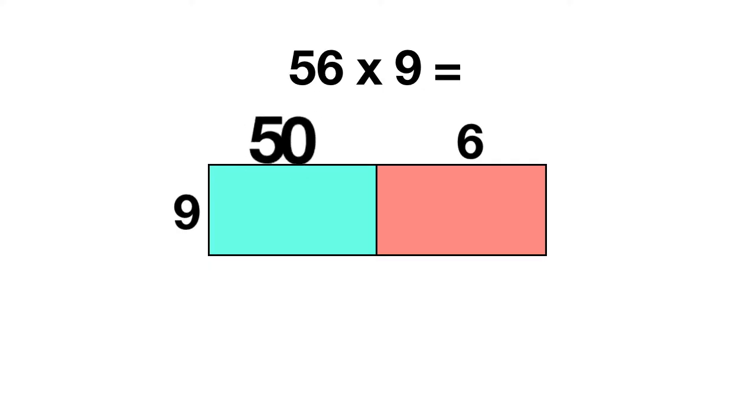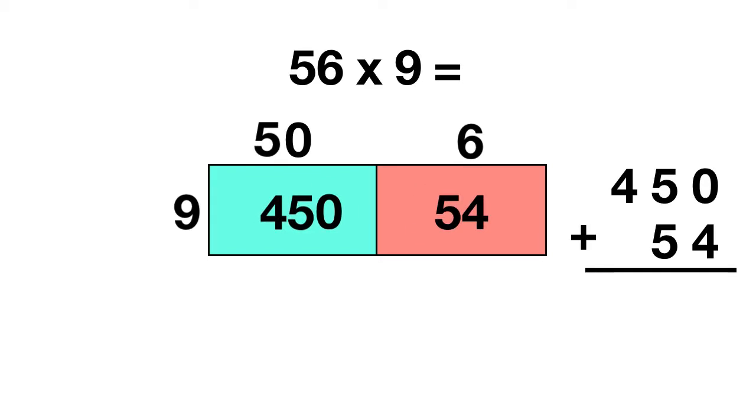In the blue box you'll multiply 50 times 9. To do 50 times 9, multiply 5 times 9 which is 45, and then add a 0, so 450. In the pink box we'll multiply 6 times 9. 6 times 9 equals 54. Then you need to take 450 and add the 54. When you do this, 0 plus 4 is 4, 5 plus 5 is 10 so write down the 0 and carry your 1, and then 1 plus 4 is 5. So 56 times 9 equals 504.